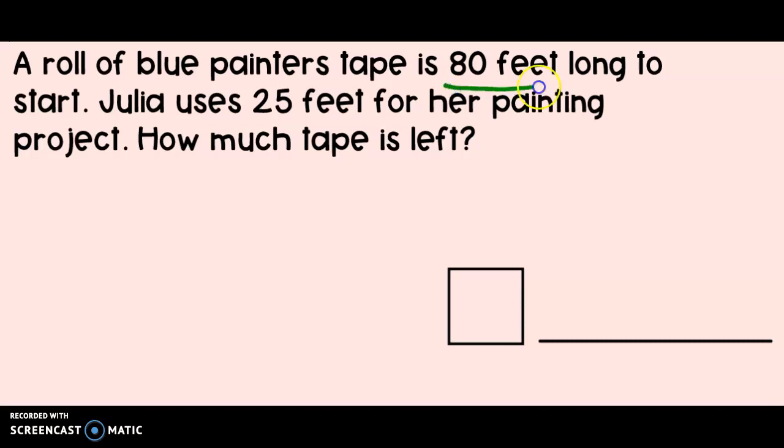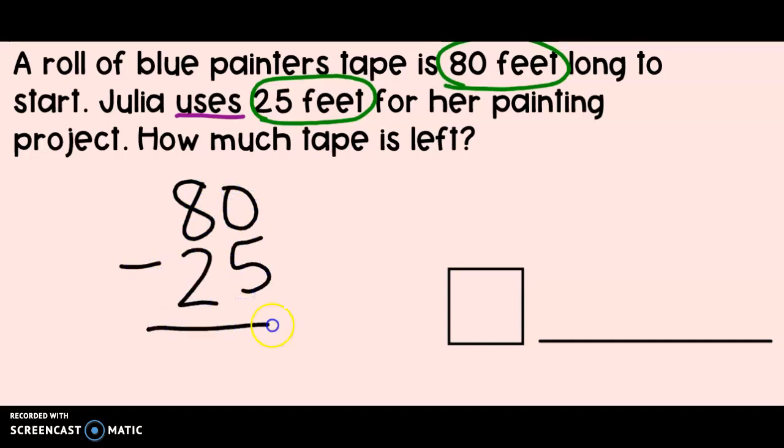First, we know that at the start, the painter's tape is 80 feet long. That's pretty long. We also know that Julia uses 25 feet for her project. So if Julia is using the tape, do you think that we should add or subtract in this problem? I think you're right. I think we're going to need to subtract because if she uses the tape, she's not getting more of it. She's going to have less.